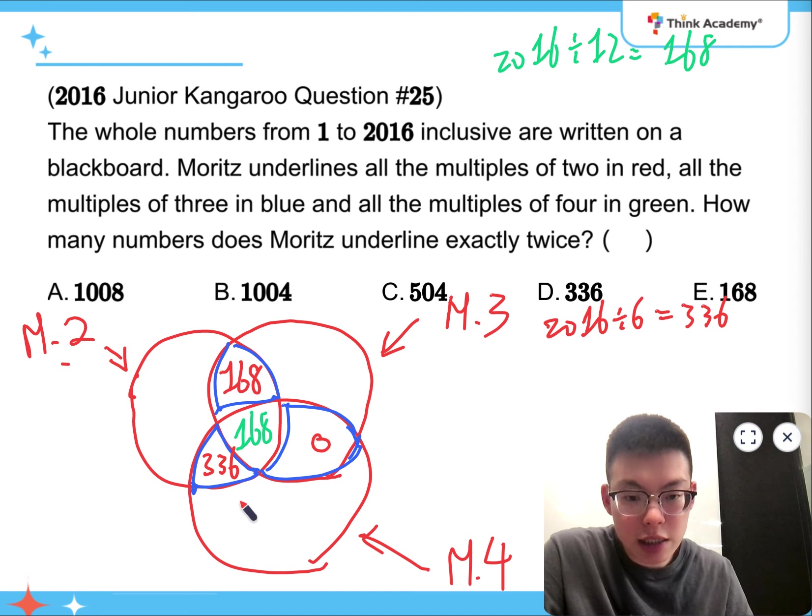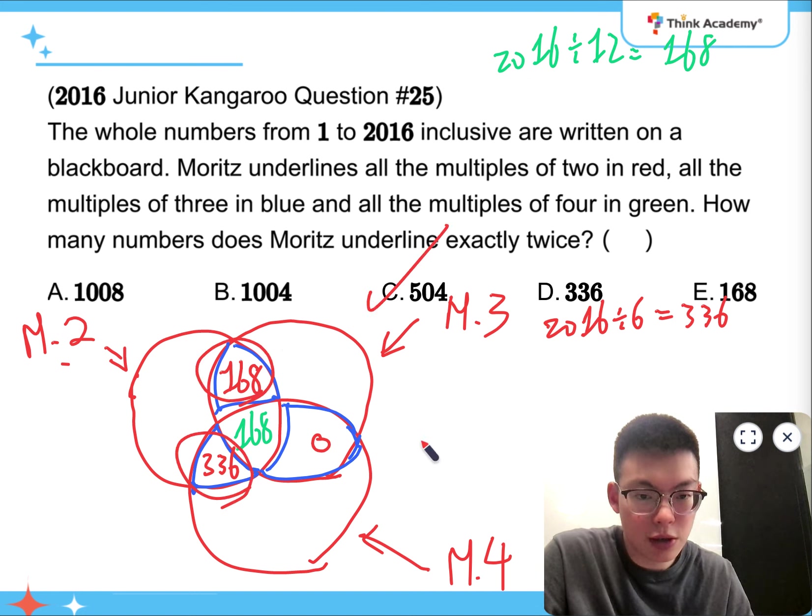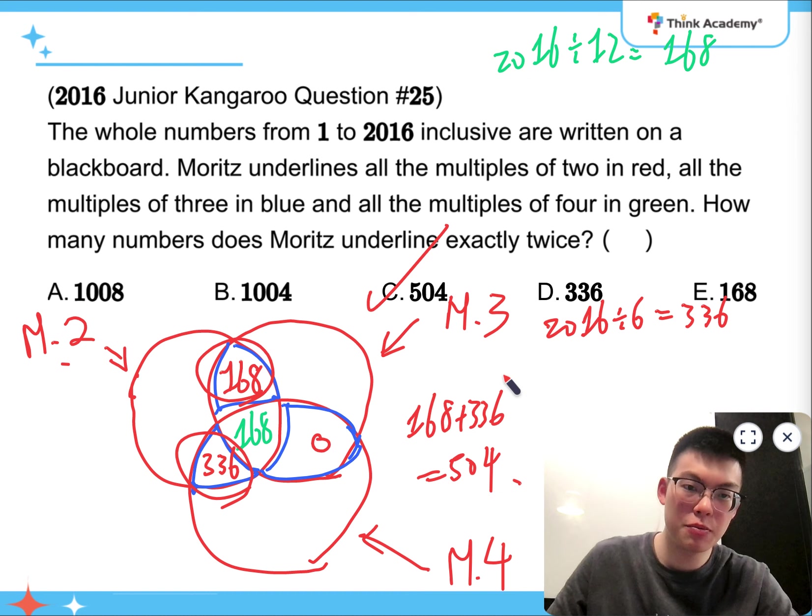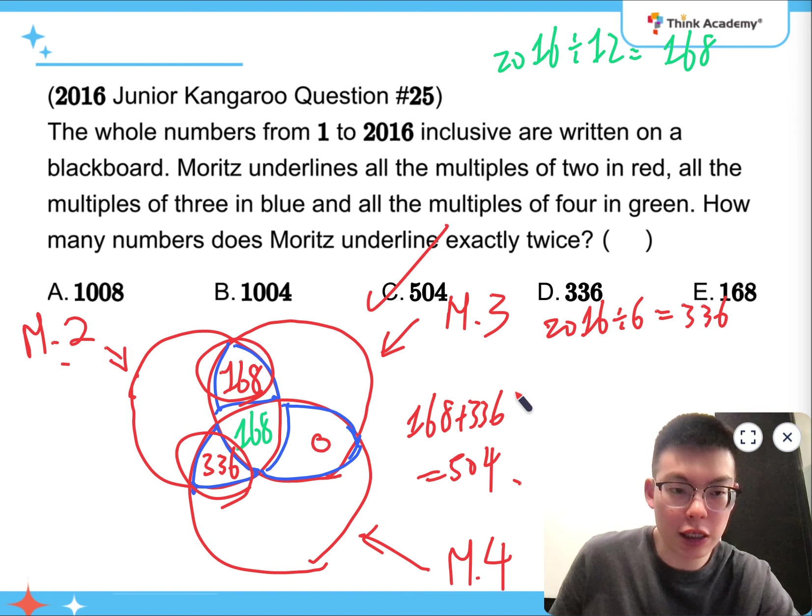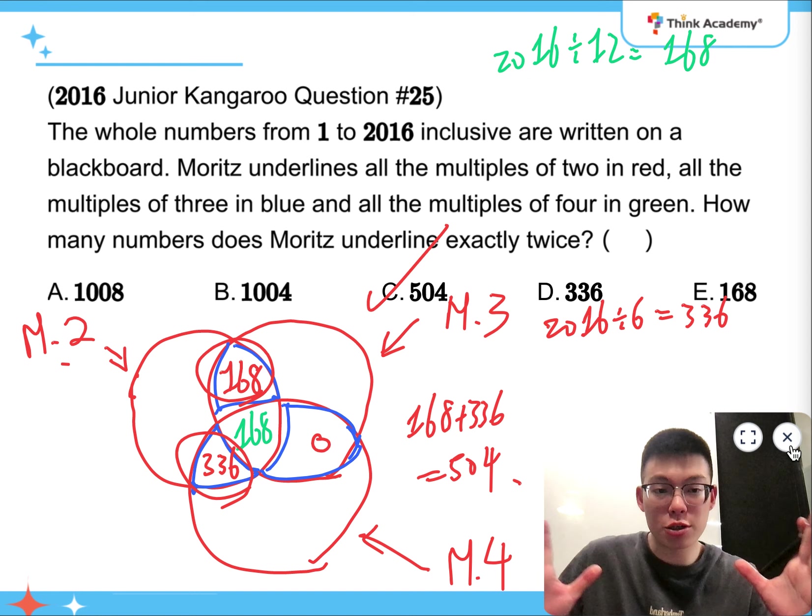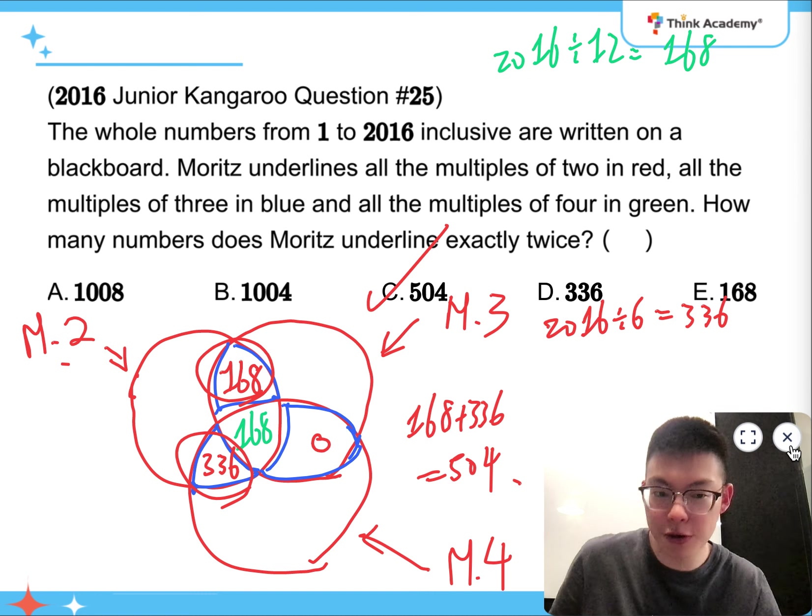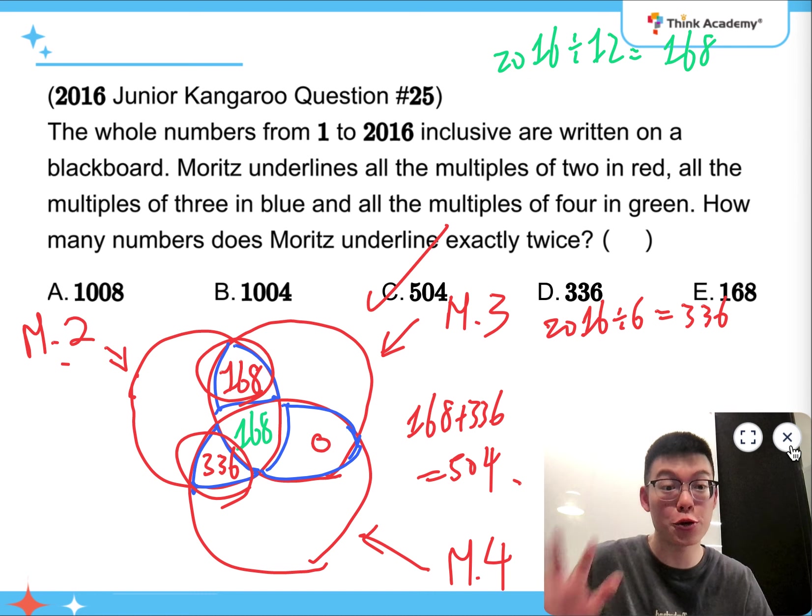So, now, I just need to add the numbers in these two zones, 168 and 336, and that adds up to 504. So, the answer is C. Okay. So, that's how we can solve this problem by the principle of inclusion and exclusion. All right. So, that's it for the 2016 paper. I hope you find it all right, and I will see you next time.